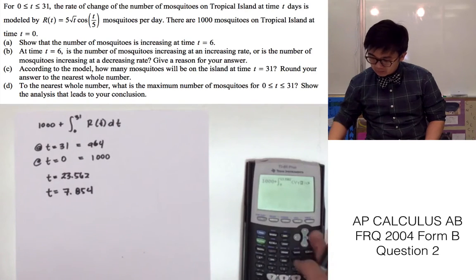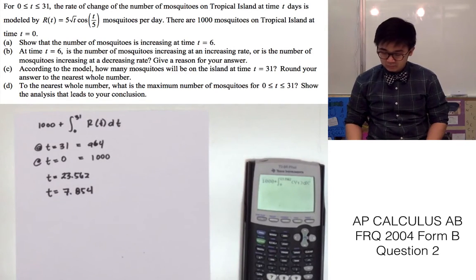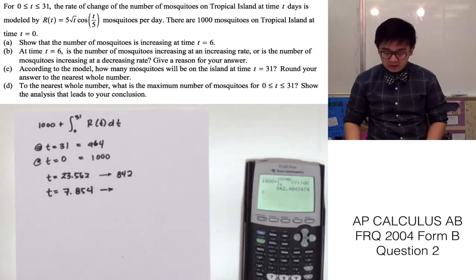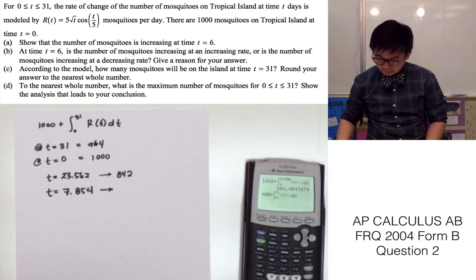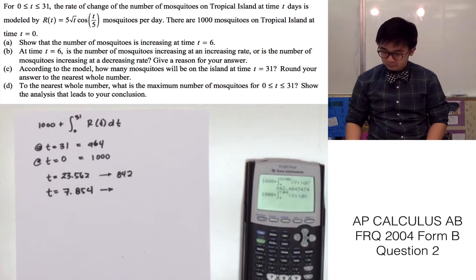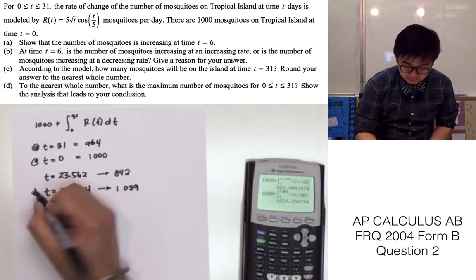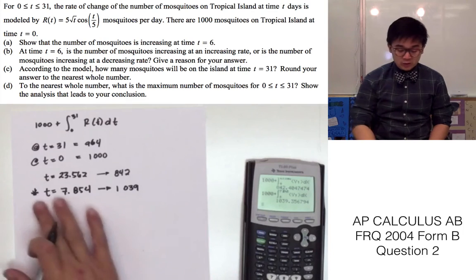Using our calculator, we count the number of mosquitoes at each critical point. At t equals 0, the count gives us 842 mosquitoes, and we also evaluate at t equals 7.854. From this analysis, we are able to determine that t equals 7.854 gives the maximum value on this interval.